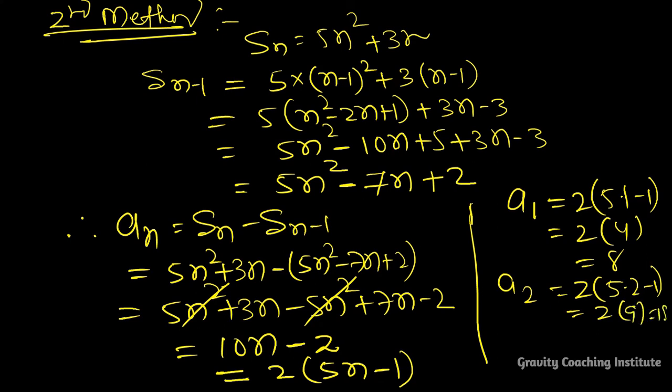Therefore, D equals A2 minus A1 equals 18 minus 8, which equals 10. Answer.